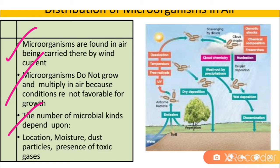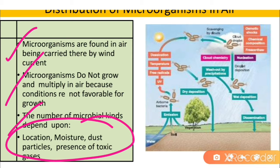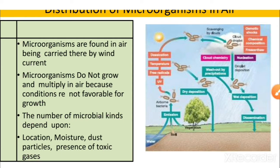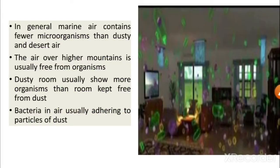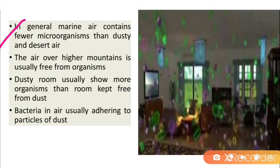The number and kinds of microorganisms in air depends on moisture, location, dust particles, and presence of toxic gases. Through the microbial cycle, microorganisms can flow from one object to another and spread everywhere. In general, marine air contains fewer microorganisms than dusty and desert air, and air over high mountains is usually free from organisms.